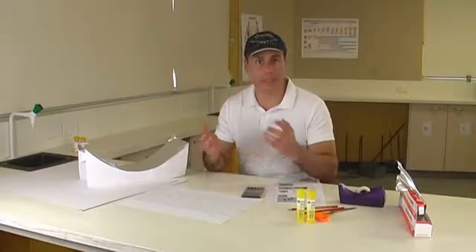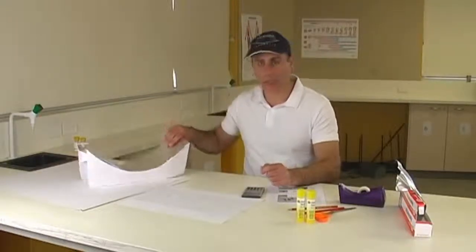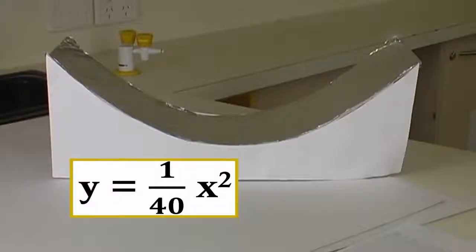Let's now use our knowledge of the mathematics of parabolas to make a simplified parabolic reflector, called a linear parabolic reflector, using some graph paper, cardboard and aluminium foil. We're going to use the equation y equals one fortieth x squared, which will give us a parabola of focal length ten centimetres. The parabola will be used to focus sunlight to heat up some water.